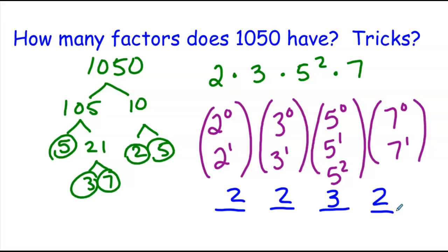Including none, some, or all of them. So using the multiplication counting principle, any combinations we can have, we can multiply these possibilities: 2 times 2 times 3 times 2 to get there are 24 total factors of 1,050. And yes, we could list them all out to confirm that.